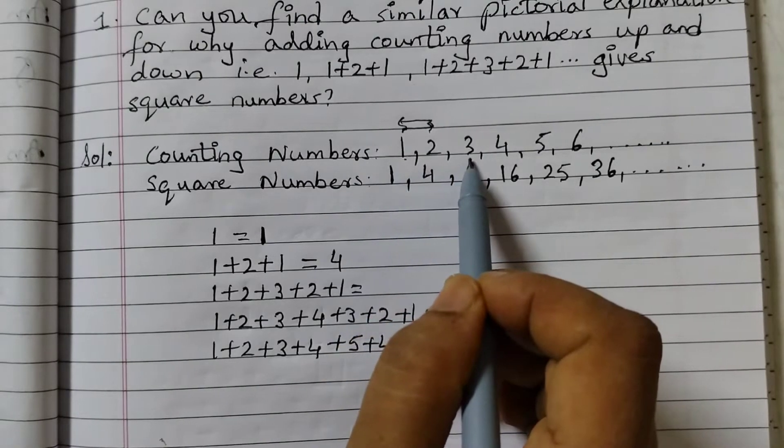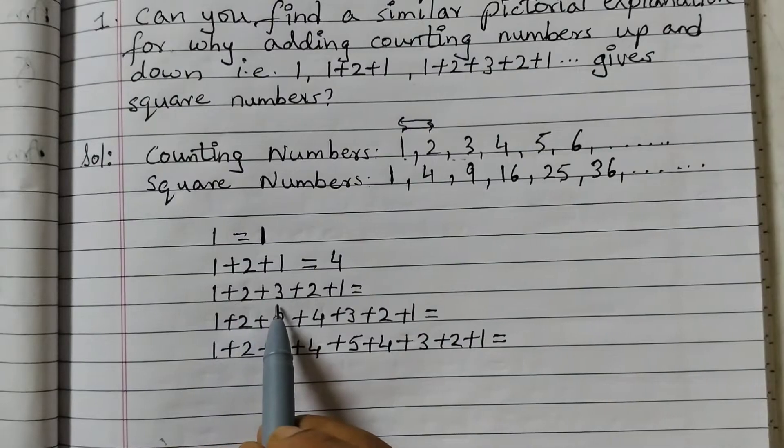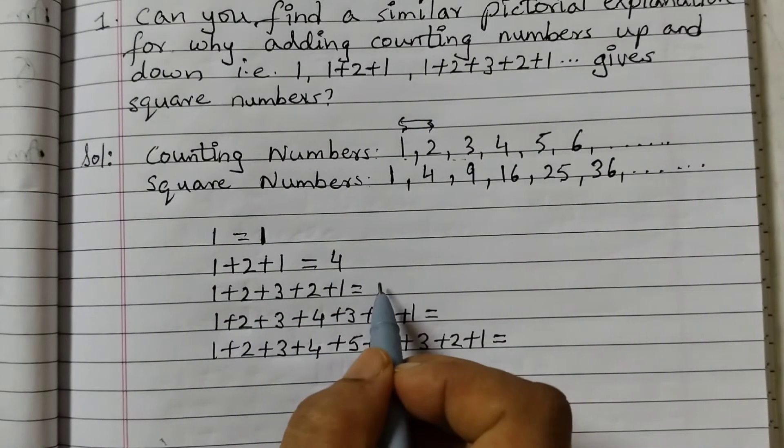Then we start from 1, we go till 3, then again come back. So 1 plus 2 plus 3 plus 2 plus 1, so that equals to 9.